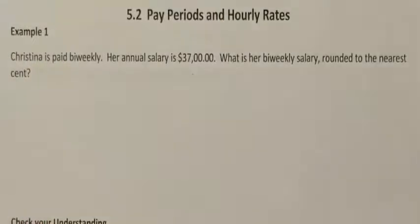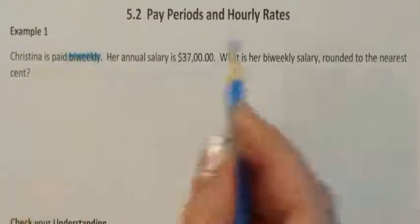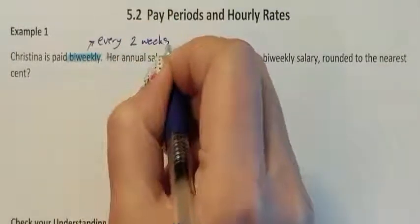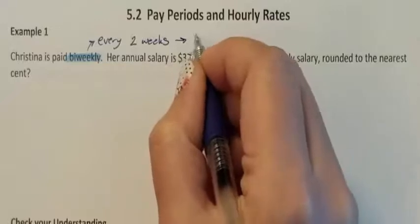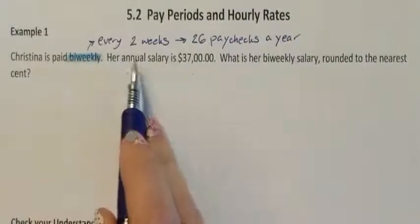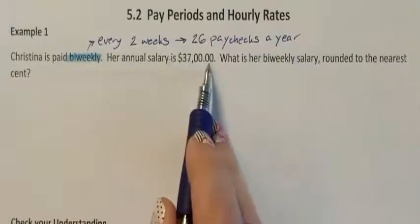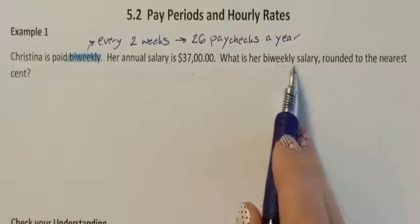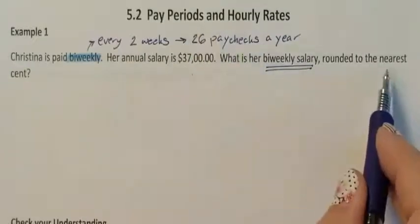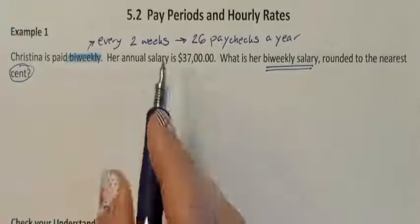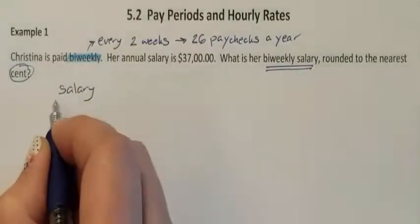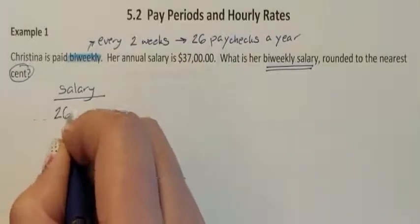Christina is paid bi-weekly. Bi-weekly means every two weeks. If you get paid every two weeks, that means you get 26 paychecks a year — so she was paid 26 times. Her annual salary is $37,000, and we want to know what her bi-weekly salary is — what did she get on each of those 26 paychecks.